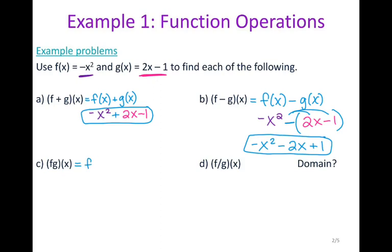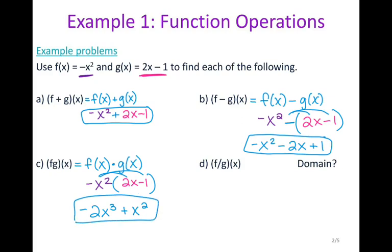For multiplication, I rewrite this as f of x times g of x. My f of x is negative x squared and g of x is 2x minus 1. We use parentheses and distribute: negative x squared times 2x is negative 2x cubed, and negative x squared times negative 1 is positive x squared. There's nothing to combine, so that is your final answer. For the quotient, I rewrite this as f of x over g of x — negative x squared over 2x minus 1. Nothing reduces, so that is your quotient.